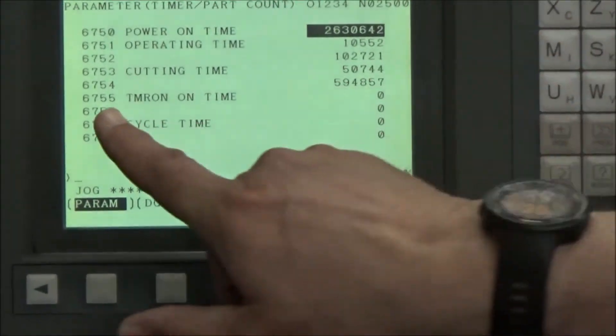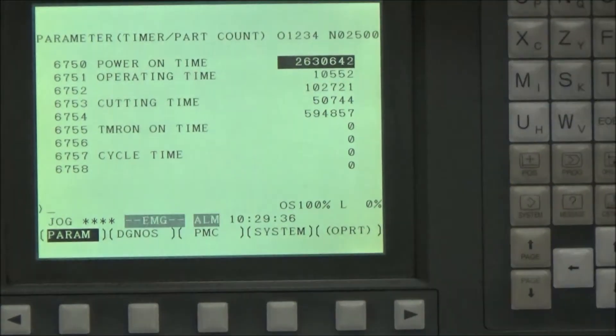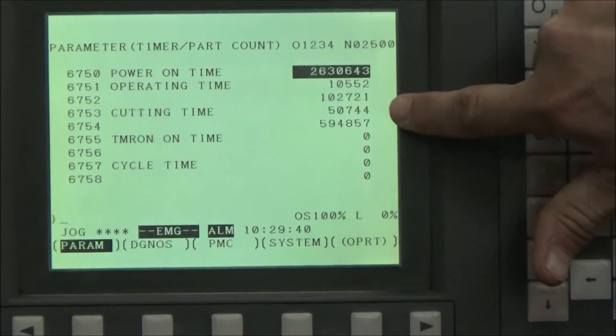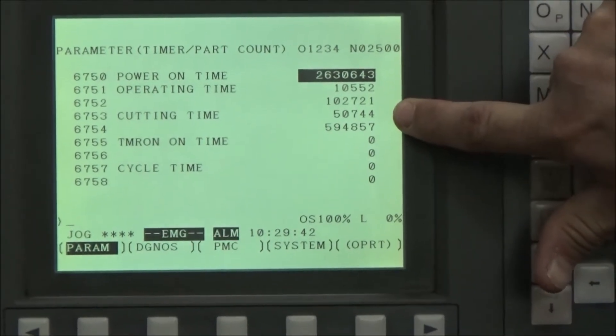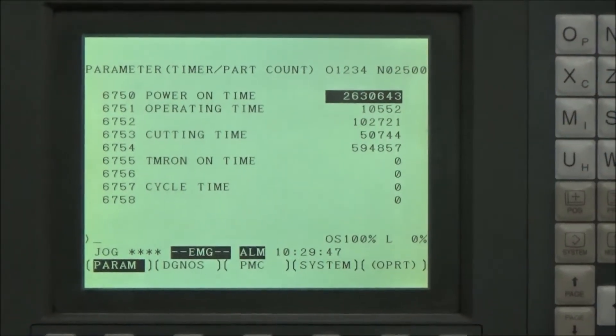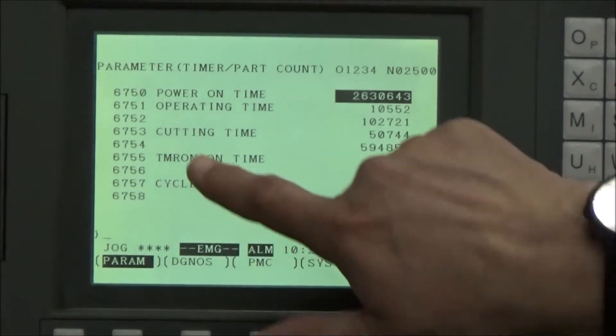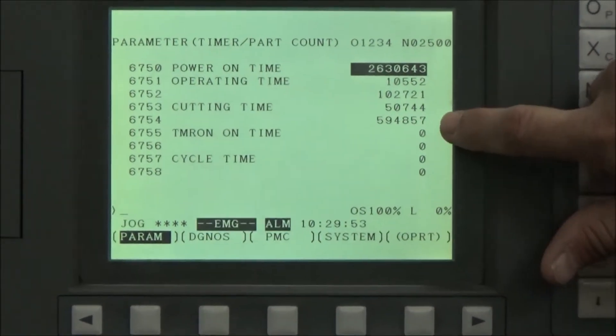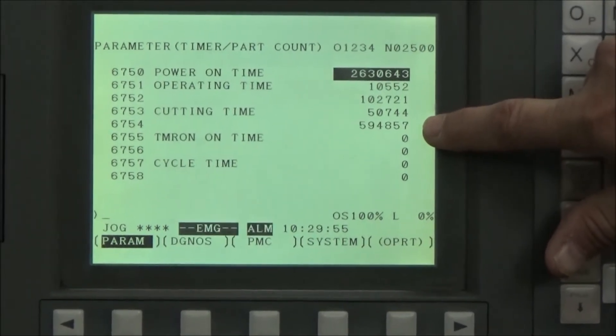Now what I'm looking for is the cutting time, which in this case is parameter 6753, cutting time, and it says 50744. So it's 50744. The line below it is blank, but it is also cutting time, they just don't repeat it. So 6754 is also that cutting time, and its number is 594857.